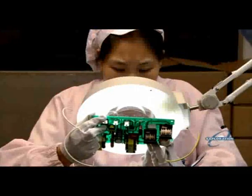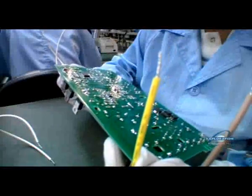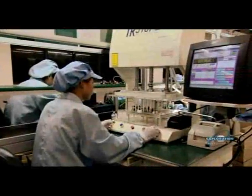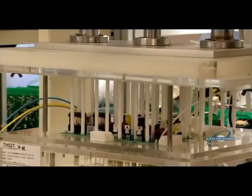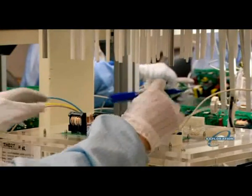Once the boards cool down, it's inspection time. First, a visual once-over to check for any missed solders. Then into a defects analyzer to check for missing or loose components. If it passes, the ballast is ready to be united with the bulb.